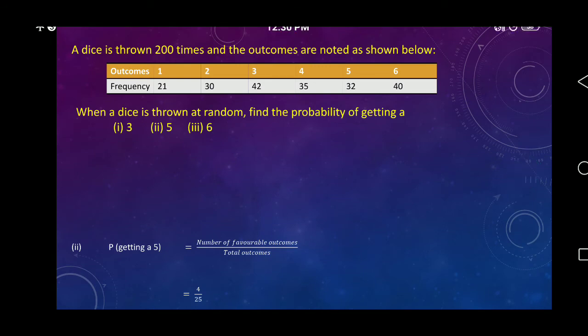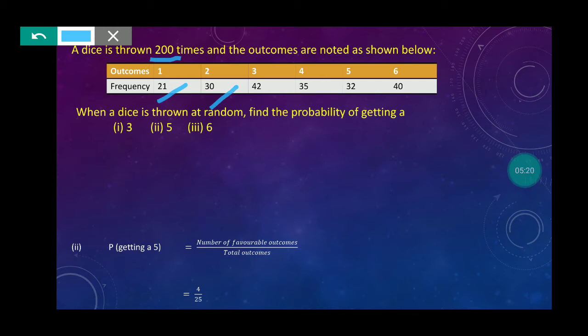Next question. A dice is thrown 200 times. In dice, what outcomes are possible? 1, 2, 3, 4, 5 and 6. When we throw the dice, 1 came 21 times, 2 came 30 times, 3 came 42 times, 4 came 35 times, 5 came 32 times, and 6 came 40 times. Now we need to find the probability of getting 3, 5, and 6.